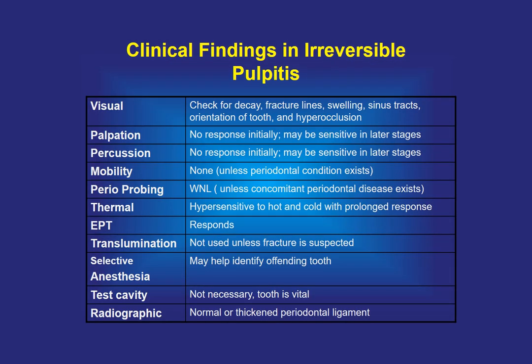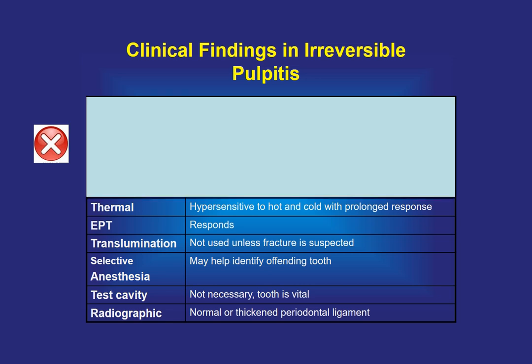In irreversible pulpitis, visual, palpation, percussion, mobility, and periodontal probing tests are not needed because the inflammation is still inside the pulp. Thermal testing and the electric pulp tester are beneficial. Transillumination, selective anesthesia, and test cavity are not needed but may be used. Radiographs are not beneficial.